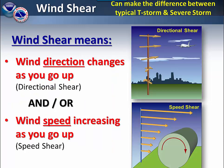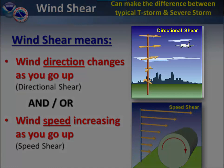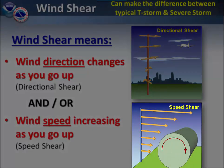Wind shear is also important. Wind shear can mean either wind direction changes or wind speed changes as you go up in the atmosphere. In the top right part of the screen is an example of directional shear. Imagine you are facing north — the winds in the lower part of the atmosphere are coming out of the southeast, and as you go further up, they gradually turn to become more southwest and then out of the west. In the lower right corner of the image, this is an example of speed shear, where winds are low in the lower part of the atmosphere but speeds increase as you go further up.